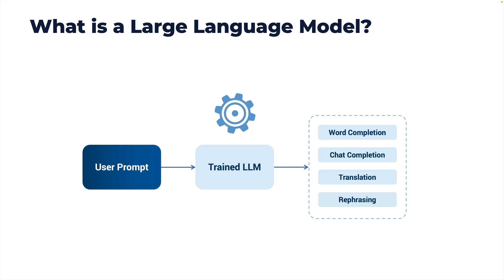Because LLMs are trained on large datasets and understand how a typical sentence is formed and what could be the correct pattern, they can also be used for rephrasing content. You can send a text and ask an LLM to increase the fluency or vocabulary of a sentence, and the LLM can do it — because it knows what typical words or patterns are used to articulate a sentence with the same meaning but with additional fluency or vocabulary.